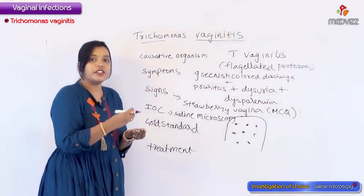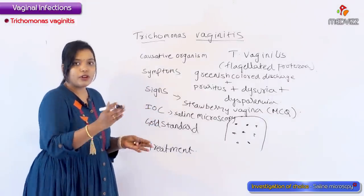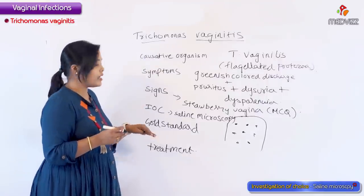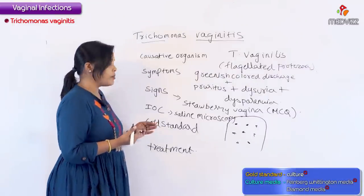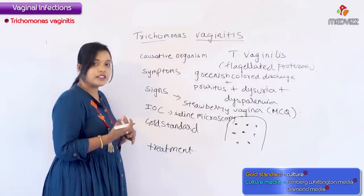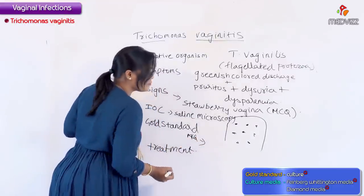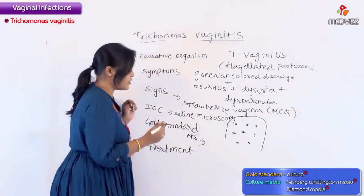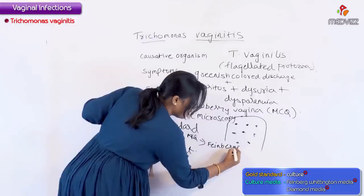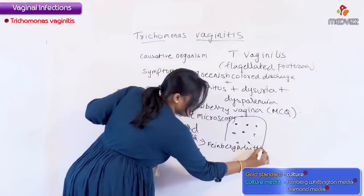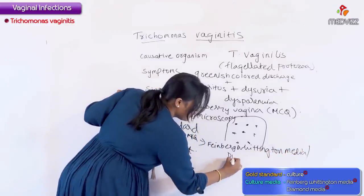The investigation of choice is saline microscopy. When you take the discharge, mount it on saline and see through a microscope, you will find the flagellated protozoa moving, which is characteristic of trichomonas. This is the investigation of choice because it is cheaper and faster. The gold standard is culture, and the culture media for Trichomonas vaginalis is Feinberg-Whittington media or Diamond media.